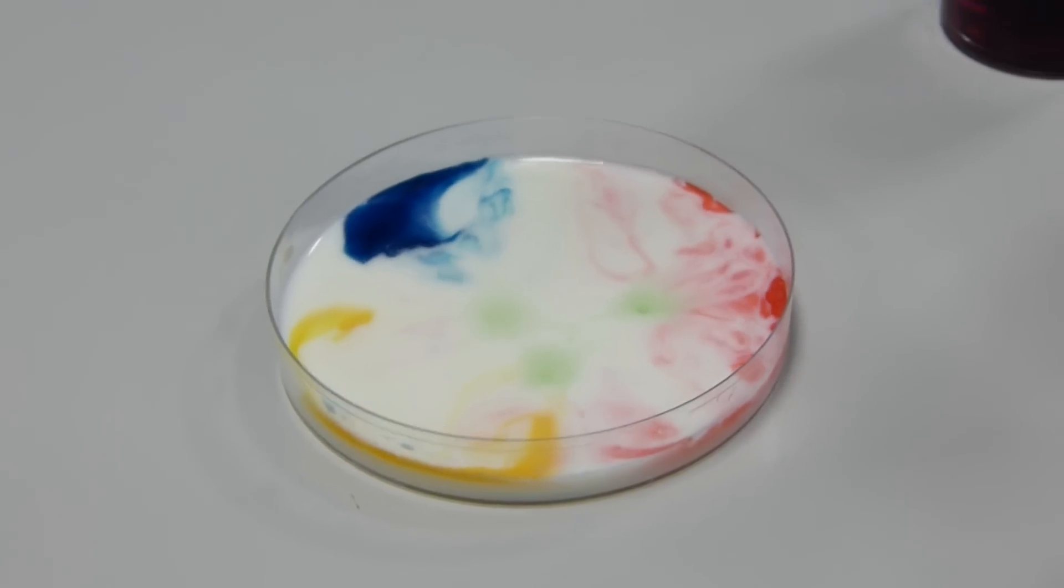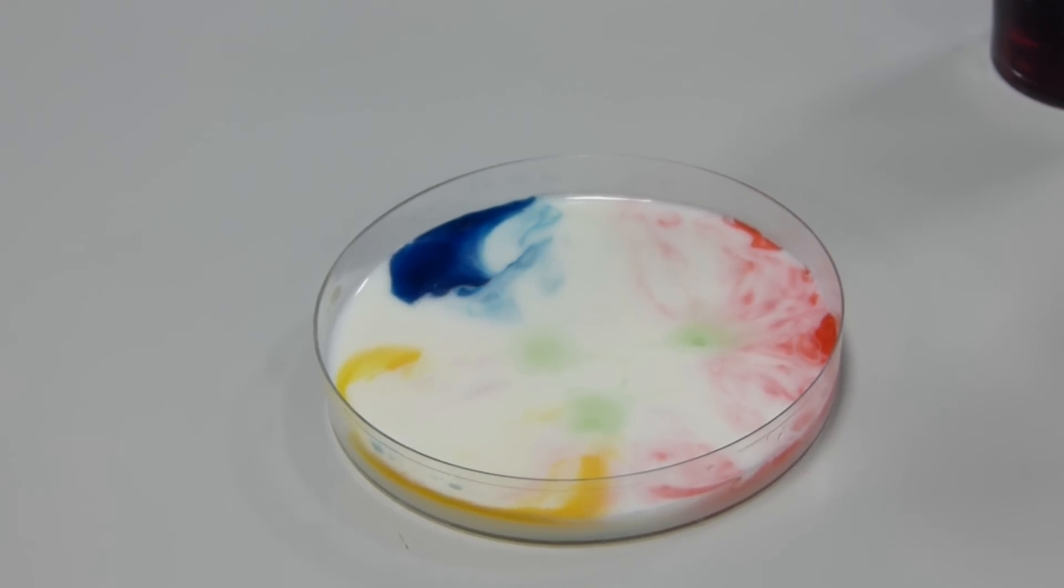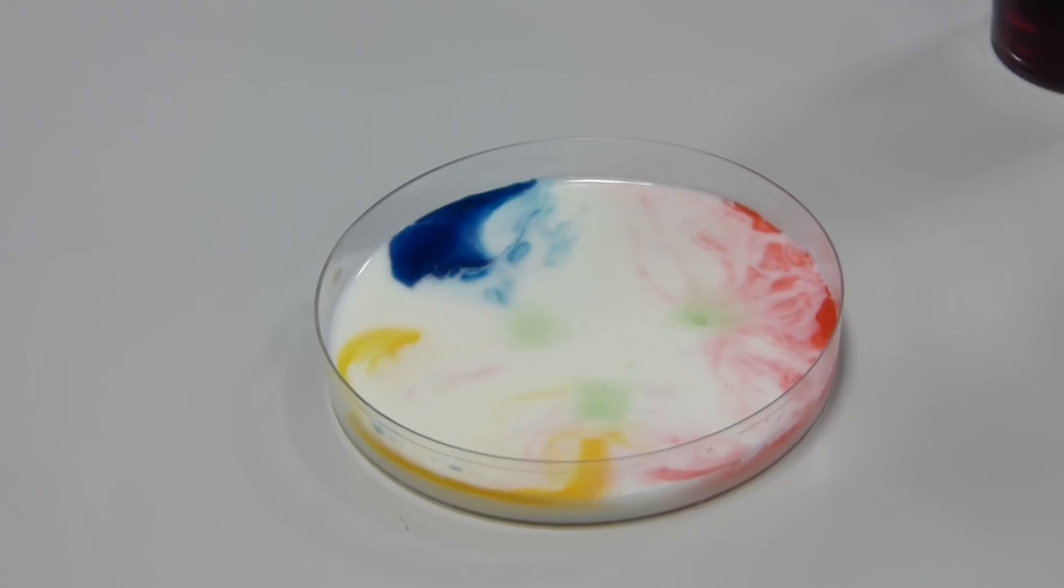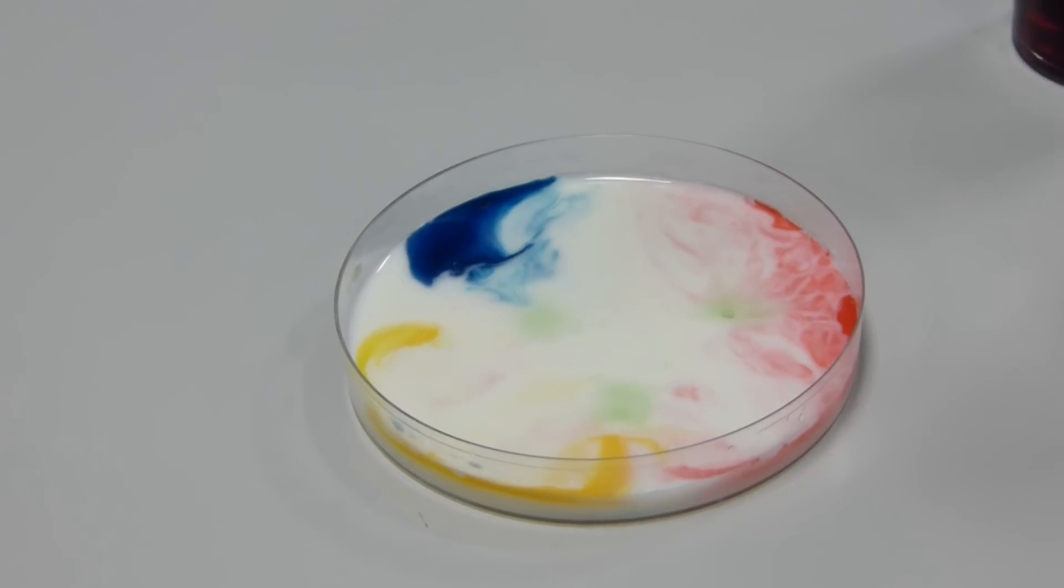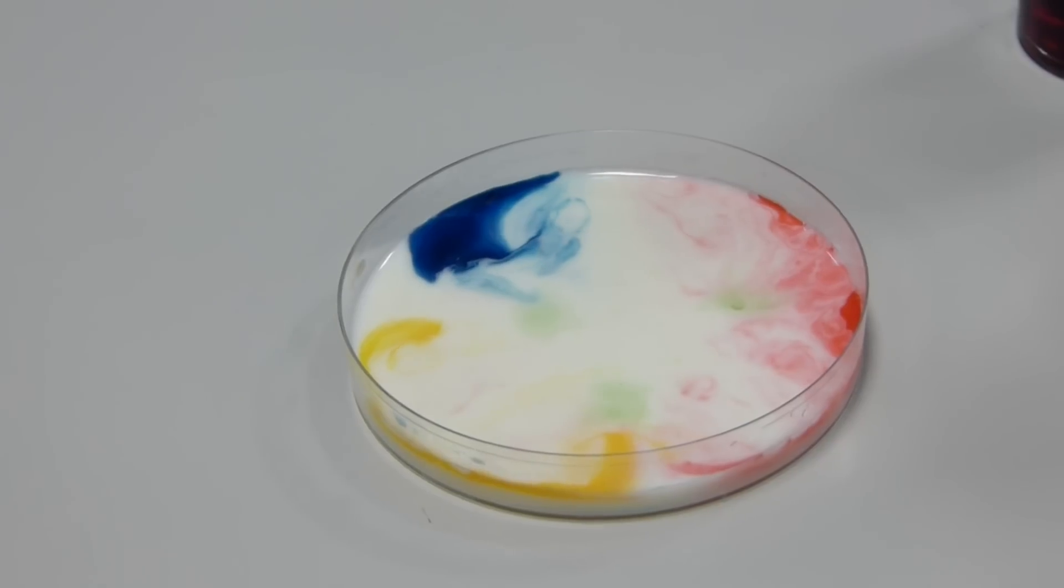it picks up the food colouring with it where the primary colours, red, blue and yellow, meet. They combine to form new secondary colours, purple, orange and green.